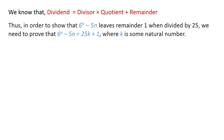Thus, in order to show that 6 raised to the power n, minus 5 times n, leaves remainder 1 when divided by 25, we need to prove that 6 raised to the power n minus 5 times n equals 25 times k plus 1, where k is some natural number.